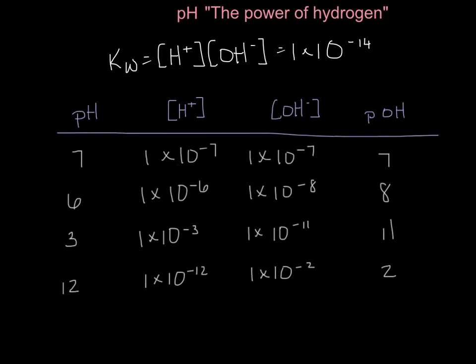1×10⁻⁷ times 1×10⁻⁷ — when we're multiplying things in scientific notation, we add the exponents. So 1×10⁻⁷ times 1×10⁻⁷ equals 1×10⁻¹⁴. This exponent is going to be equal to our pOH. And our pOH and our pH also equal 14 when we add them together. So 6 plus 8 equals 14, our hydrogen ion concentration is 1×10⁻⁶, and our hydroxide ion concentration is 1×10⁻⁸ because 14 minus 6 equals 8.